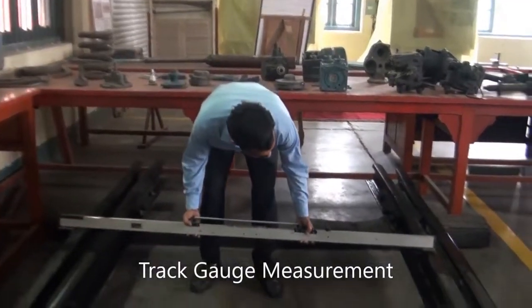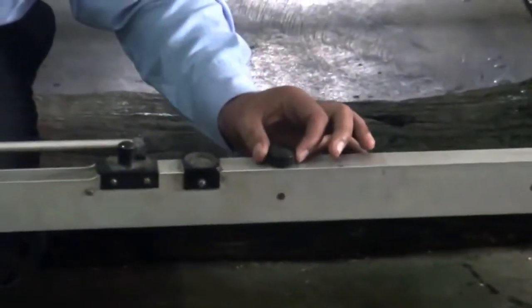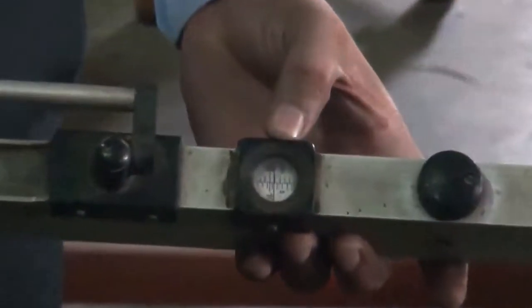To measure the track gauge, push the movable end of the instrument against the inner face of one rail. Then gently insert the fixed end. Rotate the knob to lock the reading and note down the reading on the gauge.